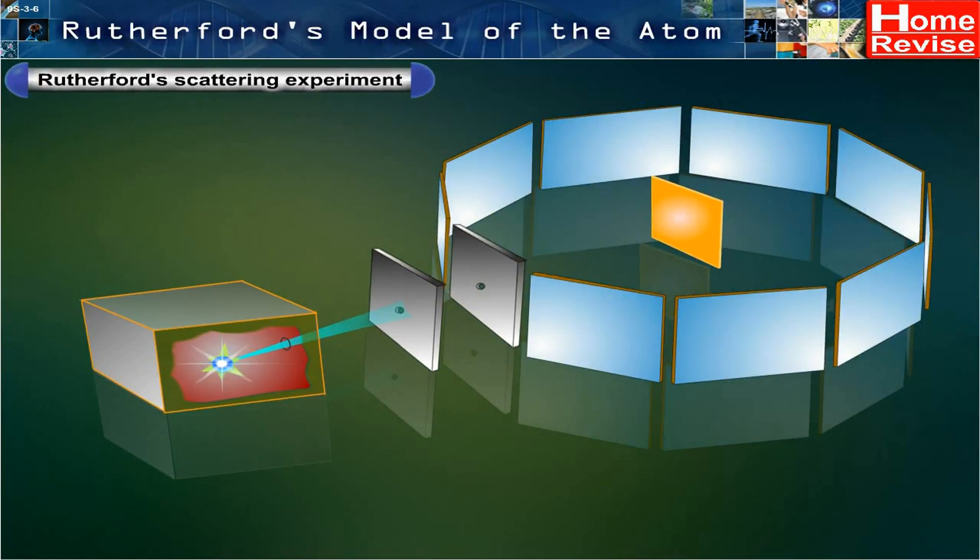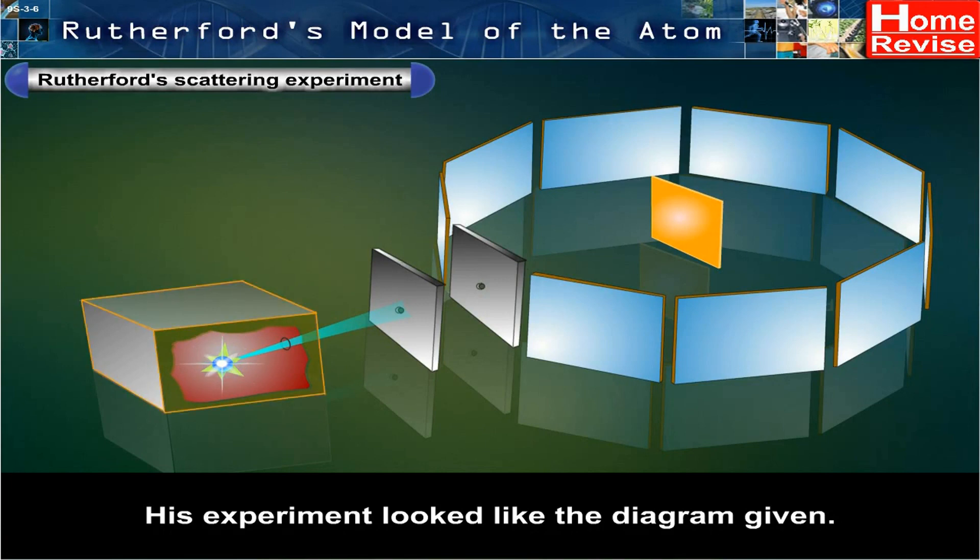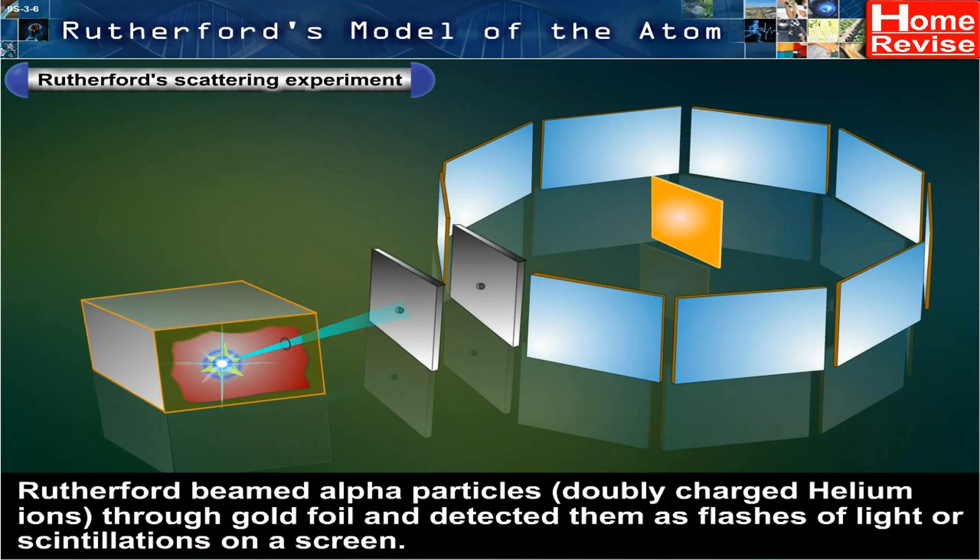Rutherford's Scattering Experiment. His experiment looked like the diagram given by Rutherford. Rutherford beamed alpha particles, that is, doubly charged helium ions, through gold foil.